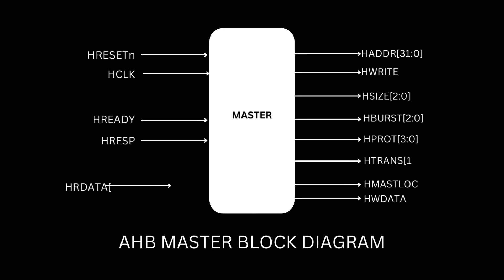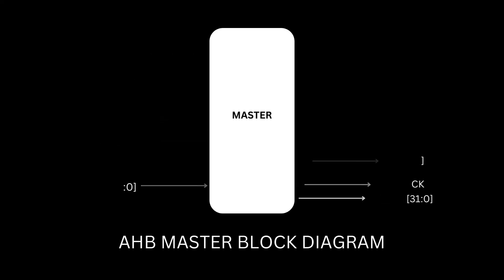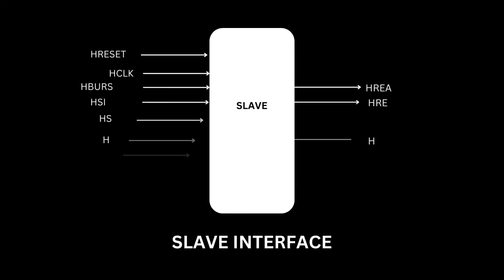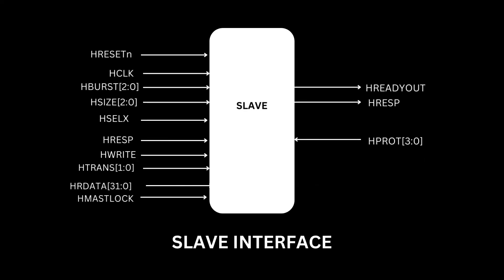The figure shows a master interface. A slave responds to transfers initiated by masters in the system. The slave uses the HSELX select signal from the decoder to control when it responds to a bus transfer. The slave signals back to the master the completion or extension of the bus transfer, and the success or failure of the bus transfer.